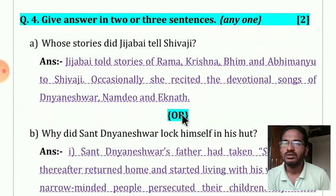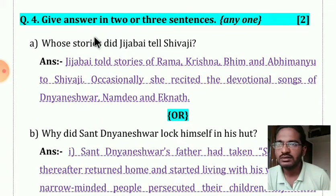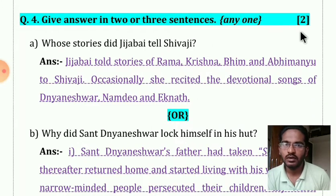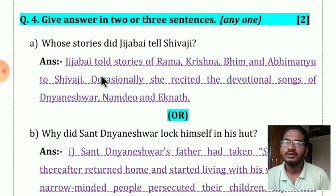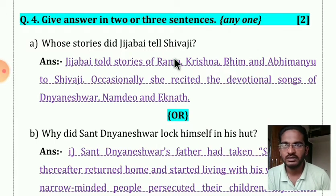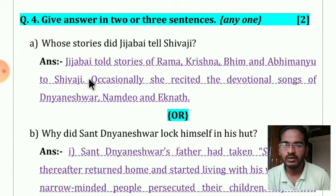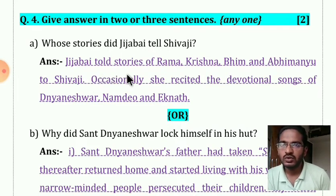Question number four — give the answer in two or three sentences, any one, for two marks. I told you to write any one, but if time is there you should write both answers. For the question 'whose stories did Jizabai tell Shivaji,' most students wrote only half the answer, so I have given only one mark. Only those who wrote the full answer will get full marks.